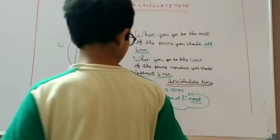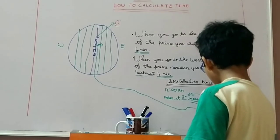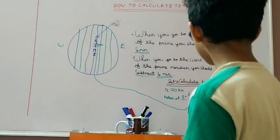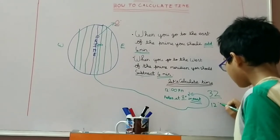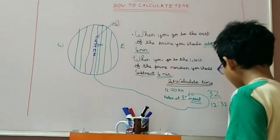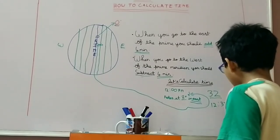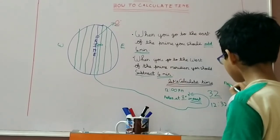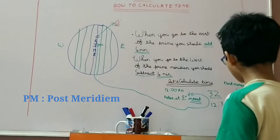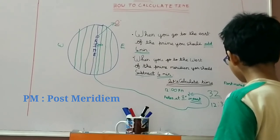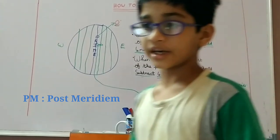So Peter is at thirty-two. So his real time is twelve thirty-two p.m. P.M. is post meridian.